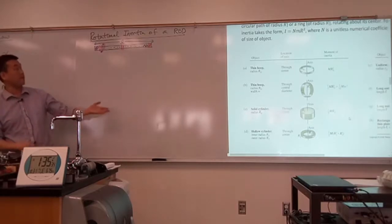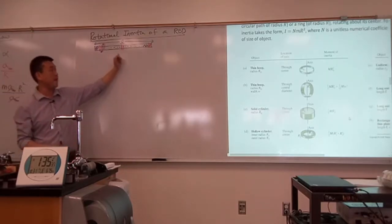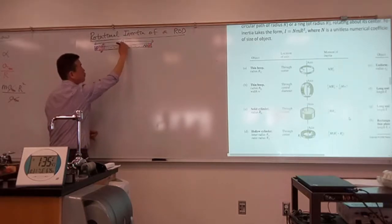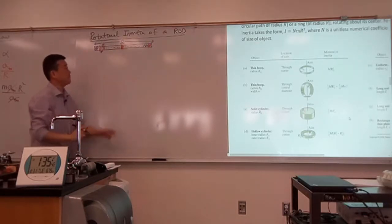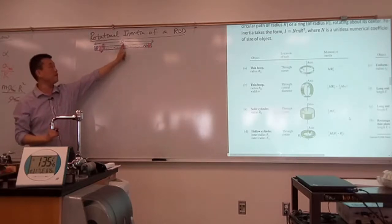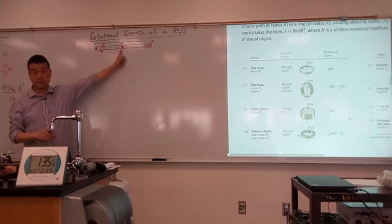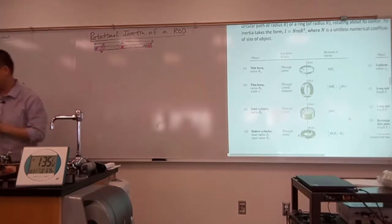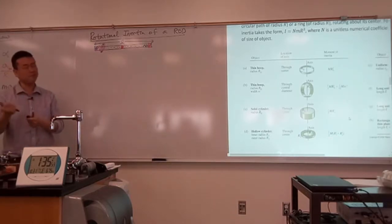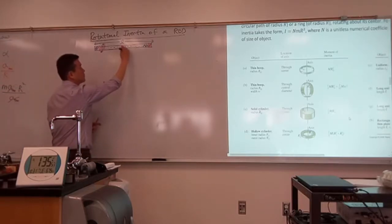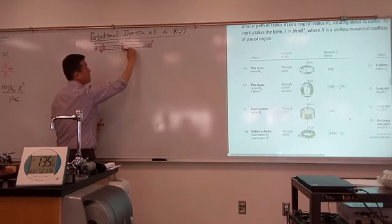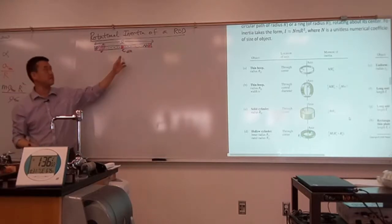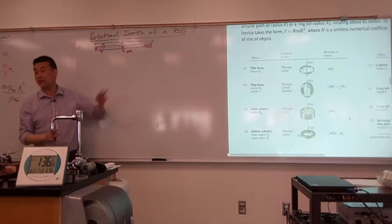I don't know how to deal with the entire ruler, but I do know how to deal with this one little piece. If it's small enough, I can treat this one little piece like a point mass. Let me introduce some new symbols that will be useful. I'm going to call the mass of this tiny little piece dm. You might have seen this kind of notation in your calculus class before.